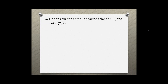Find an equation of the line having a slope of negative 1/7 and passing through the point (2, 7). We should use the point-slope form of an equation, which is y minus y1 equals m times (x minus x1), where negative 1 over 7 is our slope m, and the point (2, 7) gives us x1 and y1.